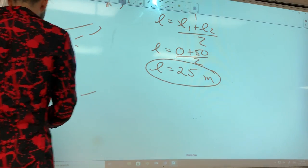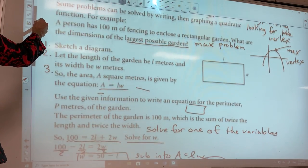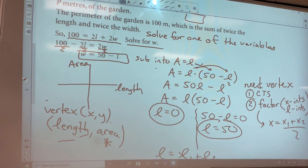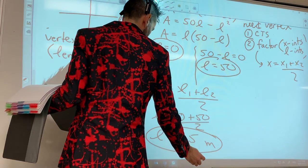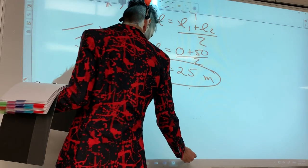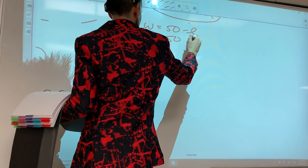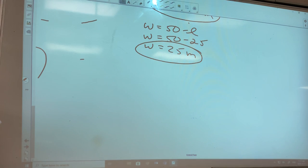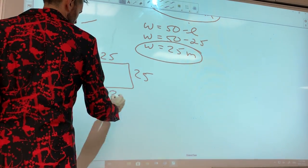They want to know the dimensions. Where do I get my width? Going back to my earlier expression: width = 50 minus L. So width = 50 minus 25 = 25 meters. So what are the magic numbers that maximize the area? It's actually a square, not a rectangle — well, a square is a special case of a rectangle. You'd go 25 meters for everything. The area is 25 times 25 = 625 square meters.